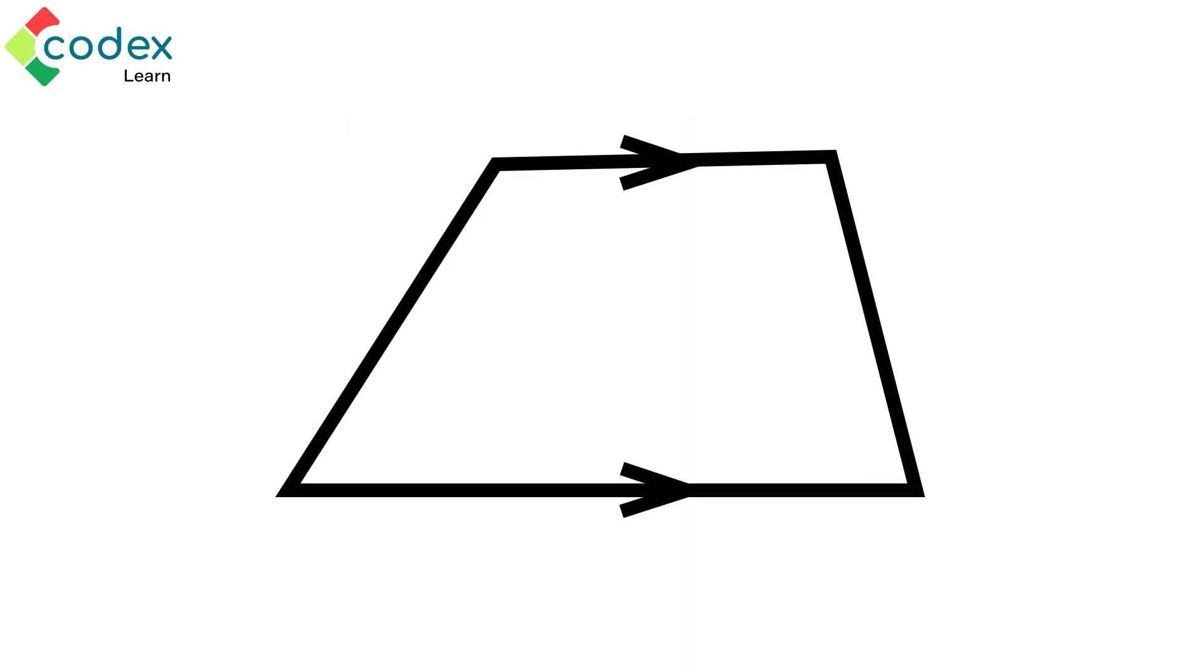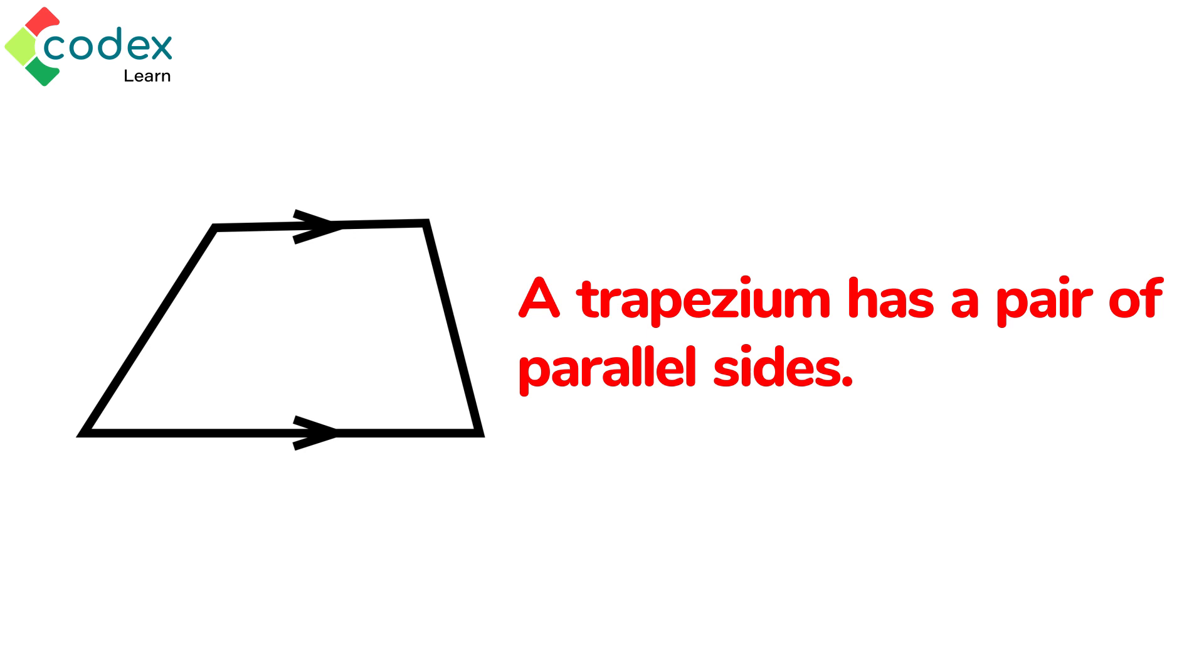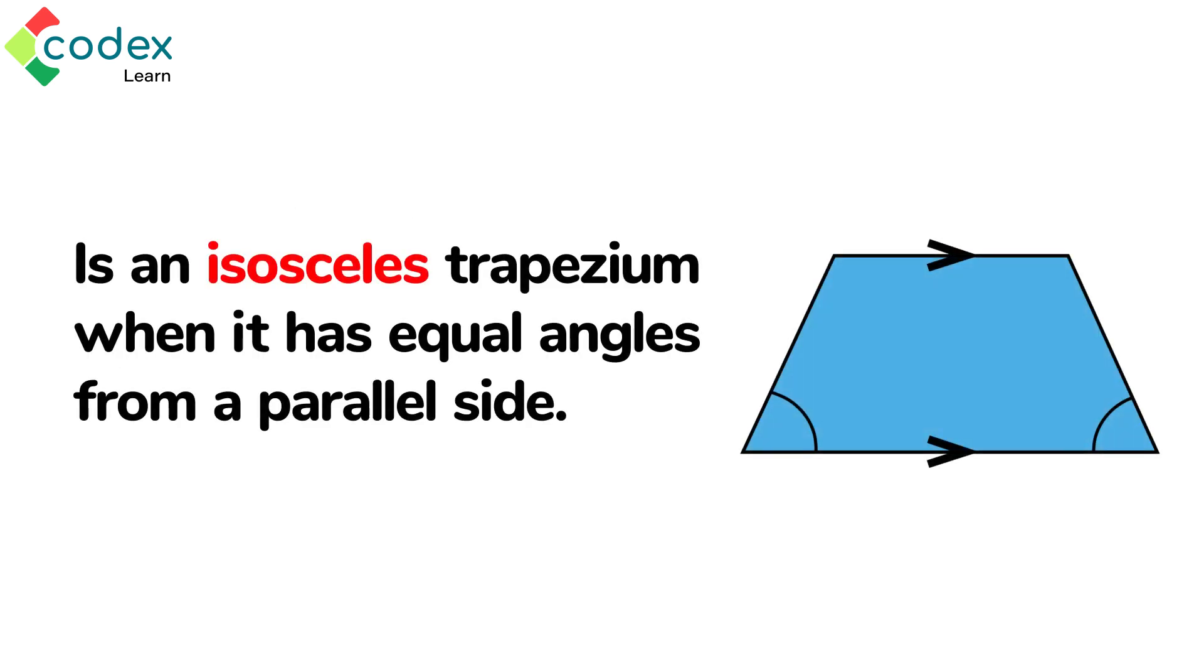Marked with arrows like this, the trapezium has a pair of parallel sides. The trapezium is also an isosceles trapezium and it has equal angles from a parallel side.